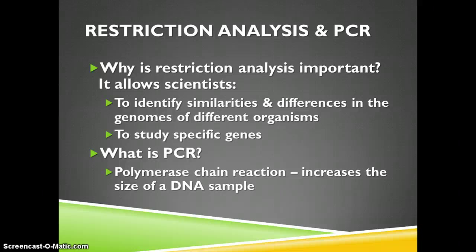Electrophoresis allows scientists to look at similarities and differences in the genomes of different organisms — for example, identifying which bear species are more closely related, or comparing the human and chimpanzee genomes, which are 98.2% the same. Restriction analysis also allows scientists to study specific genes, such as determining the difference between sickle cell hemoglobin and normal hemoglobin by analyzing the DNA sequence change that caused the differently shaped hemoglobin molecule.